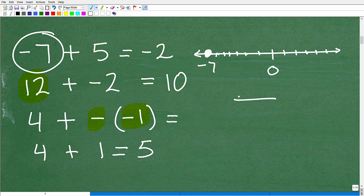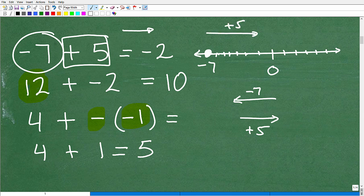Now, negative numbers go this way. Positive numbers go this way. So from negative seven, I'm going to go five units. Because this is positive, I'm going to go in this direction. So negative seven goes this way, and then I'm going to go positive five in the other direction. So negative numbers this way, positive numbers this way.